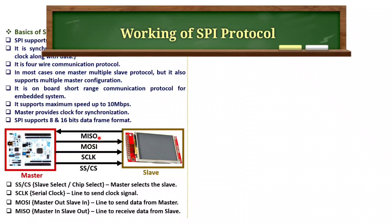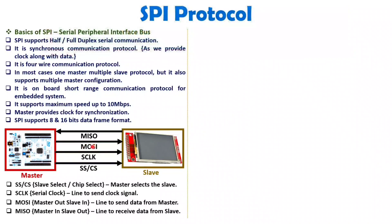In half duplex communication, the master sends data to the slave, and at that time the master does not read data from the slave — only one direction of communication happens. Once the master finishes sending data, the slave can then send data back on MISO. In full duplex mode, the master and slave can send data simultaneously, so both directions happen at the same time.